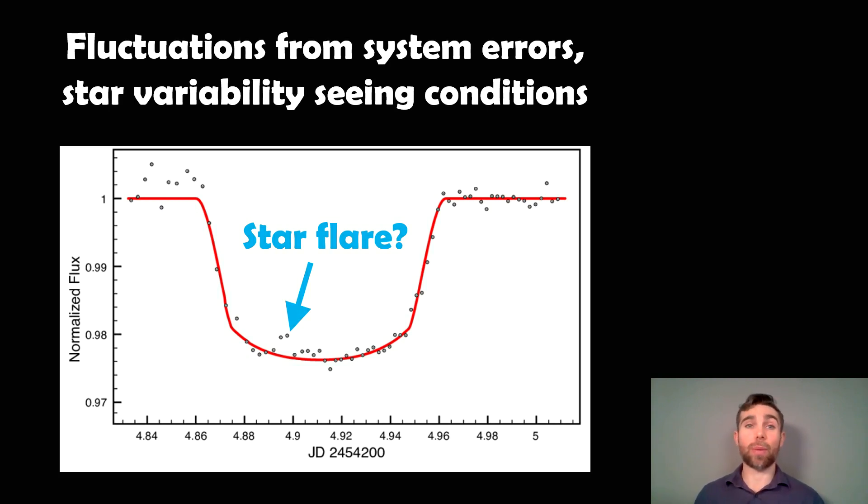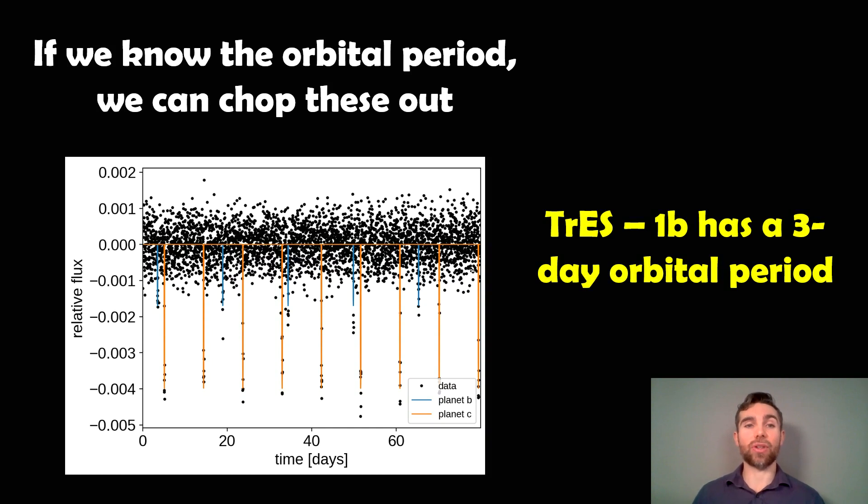Fluctuations come from maybe the star's variability, because during the transit there might have been a stellar flare which will slightly increase the brightness of the star, and these things are quite common. You may have changes in the seeing conditions throughout the evening because this will be quite a few hours worth of measurement. There could be other things like errors in the system. If it's not temperature controlled, it can give slightly different measurements throughout the night, so you have to account for all of that.